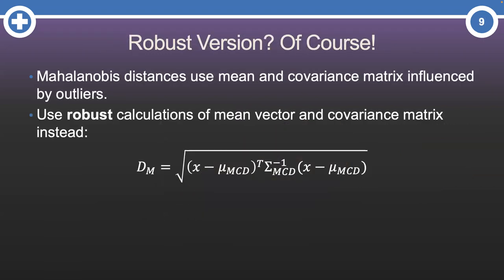Of course, there's a robust version of the Mahalanobis distance. Instead of the traditional multivariate mean and covariance matrix, we now have a robust version of each of those. But what does MCD mean?